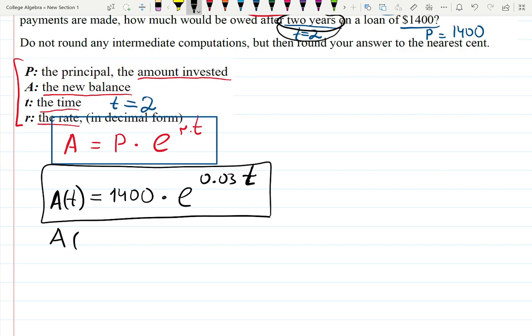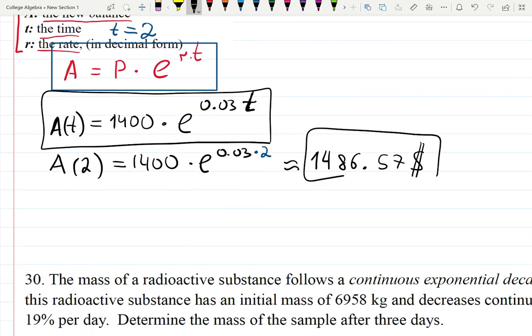This is A of t, A of t depends on t. We're asked A of 2 so t is 2, just like in the previous example you can plug 2 into this formula and then grab your calculator, carefully calculate. I'm getting in dollars $1486.57. We rounded to the nearest cent, so that's what happened here.